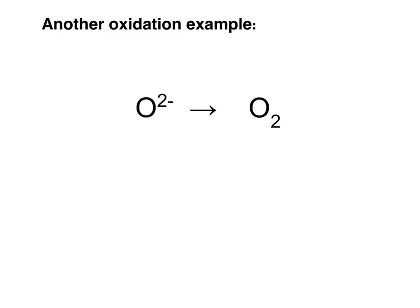In this example we've got the oxide ion (O²⁻) becoming an oxygen molecule (O₂). First, let's check we have the same number of atoms on each side. On the left we have 1 oxygen atom and on the right we have 2, so I need to balance those by placing a 2 in front of the oxide ion on the left. Now we have the same number of atoms on each side.